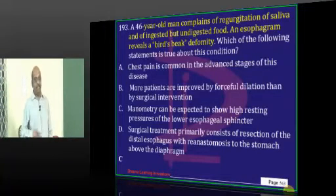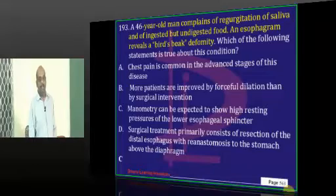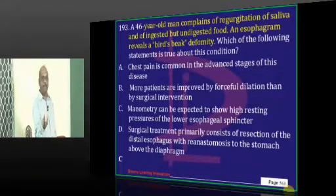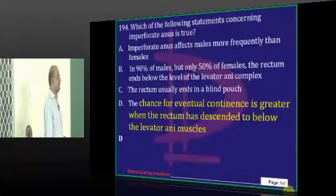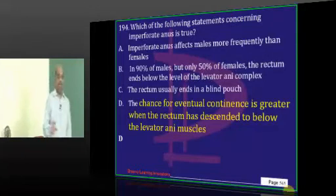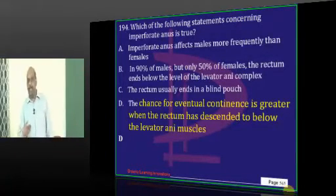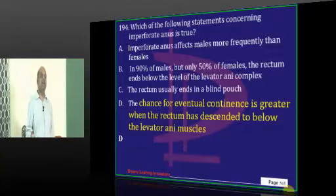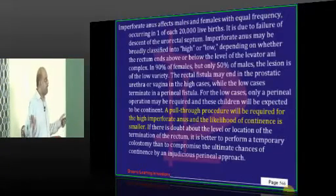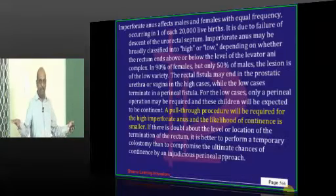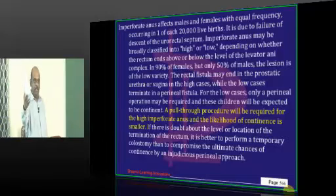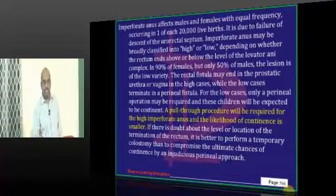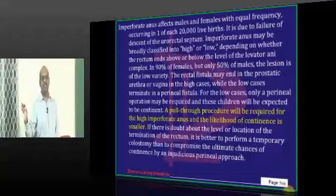A 46-year-old with regurgitation and bird-beak deformity indicates achalasia — the lower esophageal sphincter pressure will be high and fails to relax. Imperforate anus can be high anal malformation or low anal malformation, always in relation to the levator ani muscle. High malformation requires a pull-through procedure and continence post-procedure is doubtful, but low malformation has a relatively good prognosis.